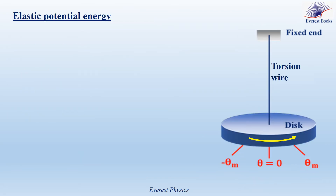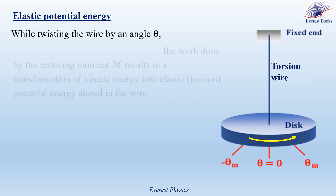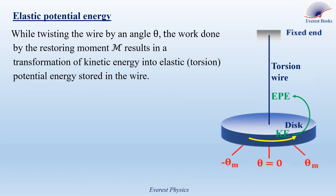Elastic potential energy stored in a torsion wire. While twisting the wire by an angle theta from its equilibrium position, the work done by the restoring moment results in a transformation of kinetic energy in the rigid object into elastic or torsion potential energy stored in the wire. The elastic potential energy stored in the wire is given by: EPE equals one-half C theta squared. We can make an analogy: C is analogous to k and theta is analogous to x from the spring formula EPE = one-half k x squared.